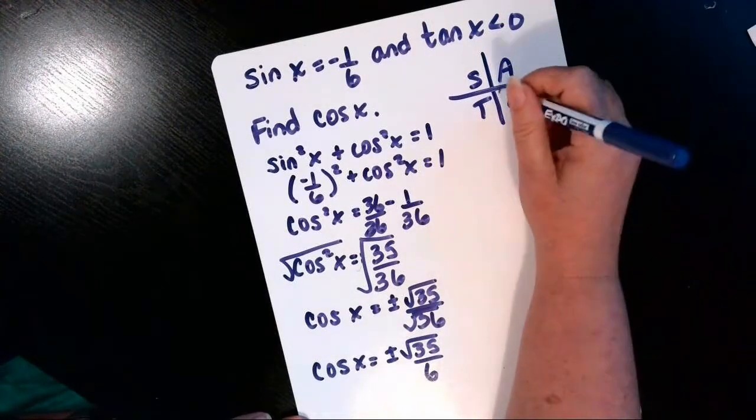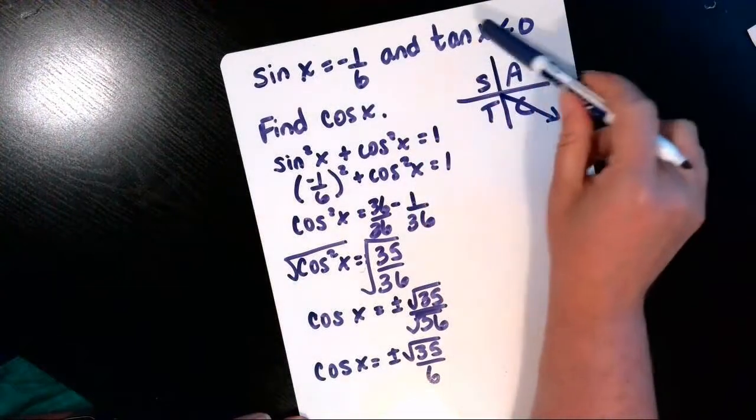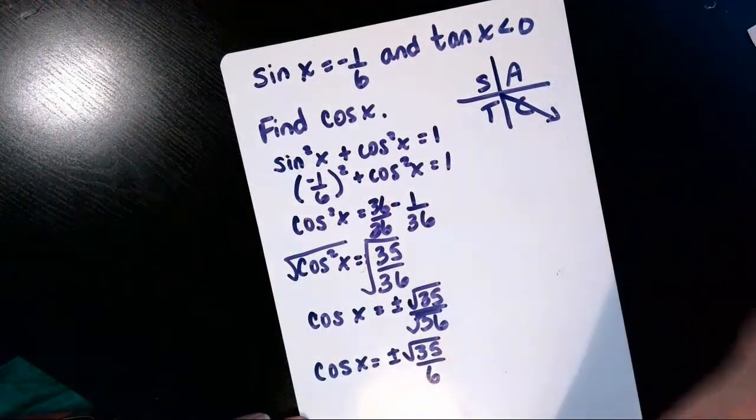But we want the tangent to be negative. So we're left with quadrant four, where cosine and secant are positive, but sine and tangent are both negative in quadrant four.